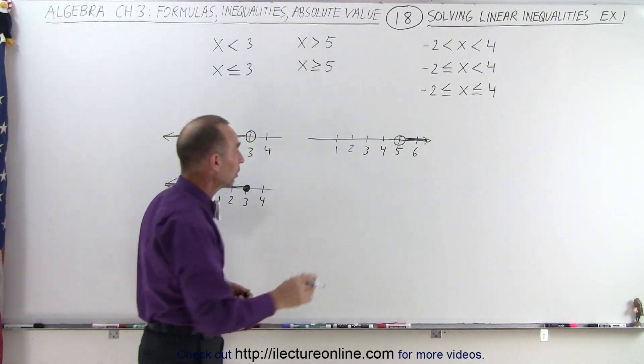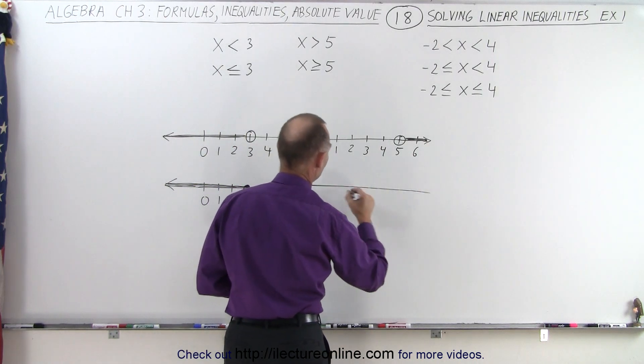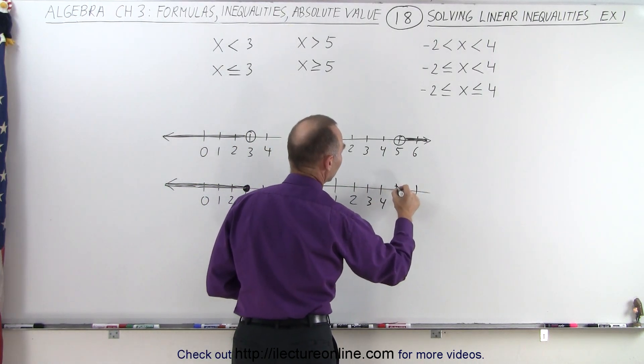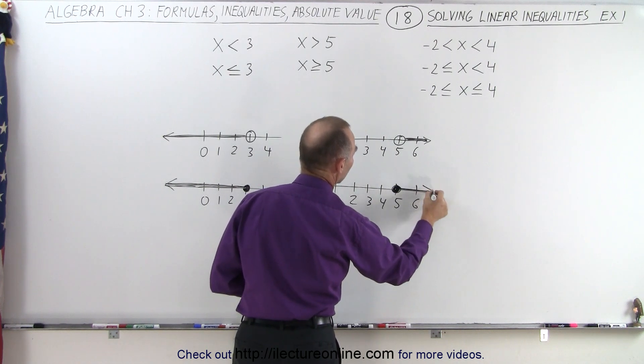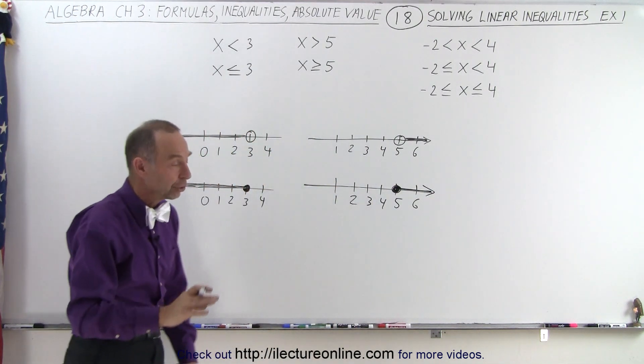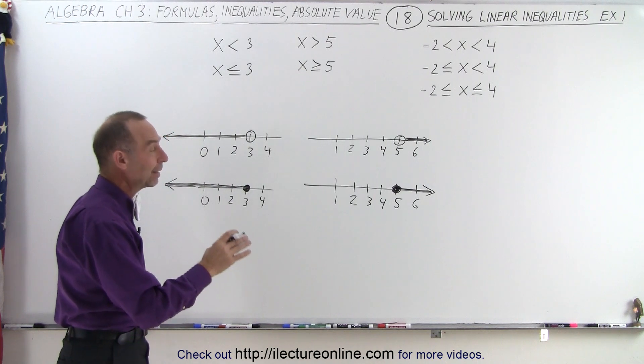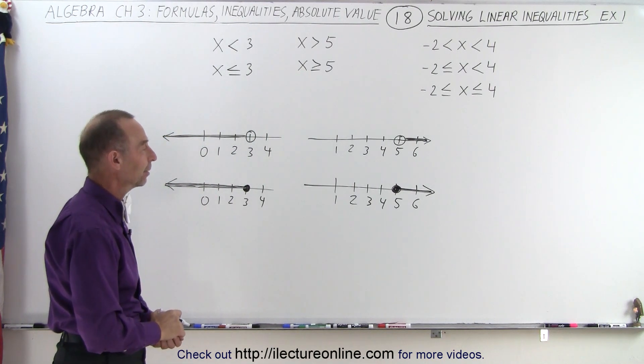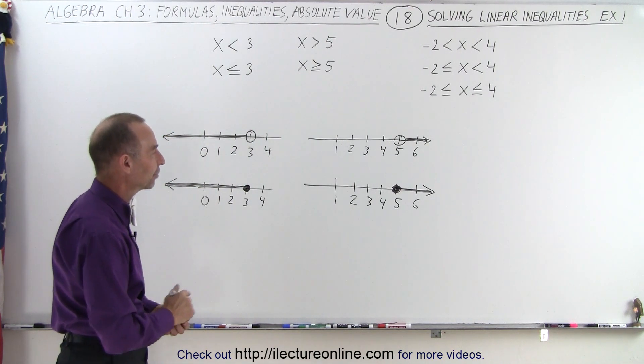But if we're going to include the number 5, we can do this again. In this case, we have a solid circle on the number 5, then point to the right to indicate all numbers greater than 5 including 5, so we make the number 5 dot solid.